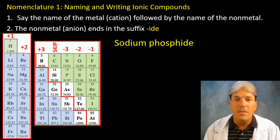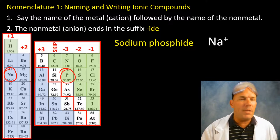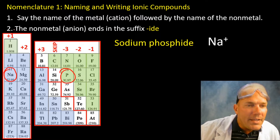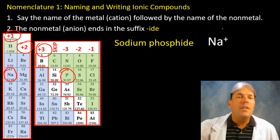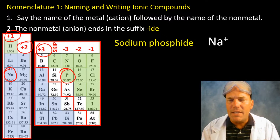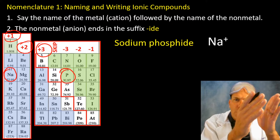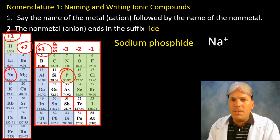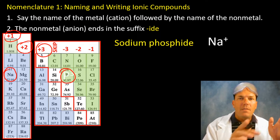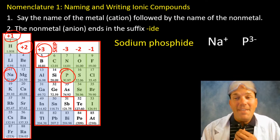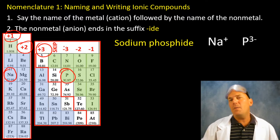Sodium phosphide. Let's look at the charges. Sodium has a plus one — that's why we write these numbers above the periodic table. We don't write the "1" though; we only put the plus sign, because it is implied. The entire group one family has a plus one charge. Phosphorus — or phosphide — has a negative three charge. It is in the nitrogen group, which has a minus three above it.